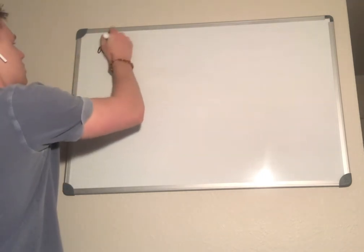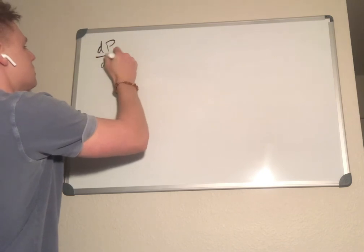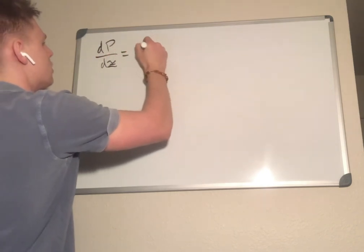Problem 1.14: The variation of fluid pressure with height is described by the differential equation dp over dz is equal to negative rho g.